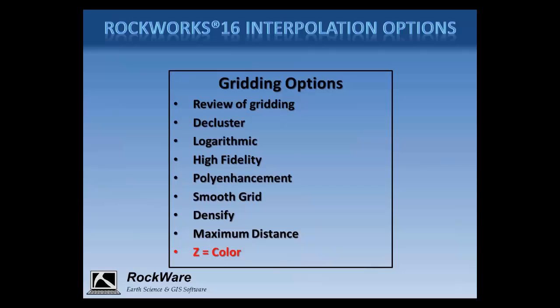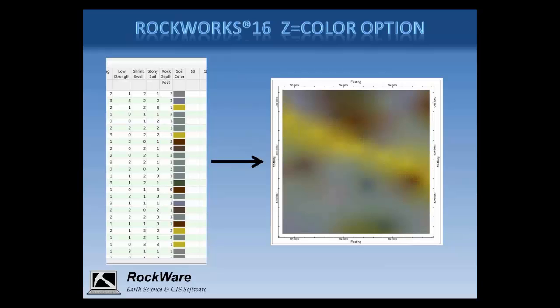Last on the list is the option to model color rather than a numerical value, labeled 'Z equals color' in the interface. This option should only be turned on when creating a model or grid based on color data stored in the color table in the borehole manager database or within the utilities data sheet. If you've already created a color model and want to display it, you would also need to choose a special color scheme available in Rockplot 2D and Rockplot 3D. This is a fairly unknown feature in Rockworks — if you've logged Munsell cell colors in the field, there is a tool for converting Munsell cell codes to Windows color numbers, which can then be modeled or displayed in the program.